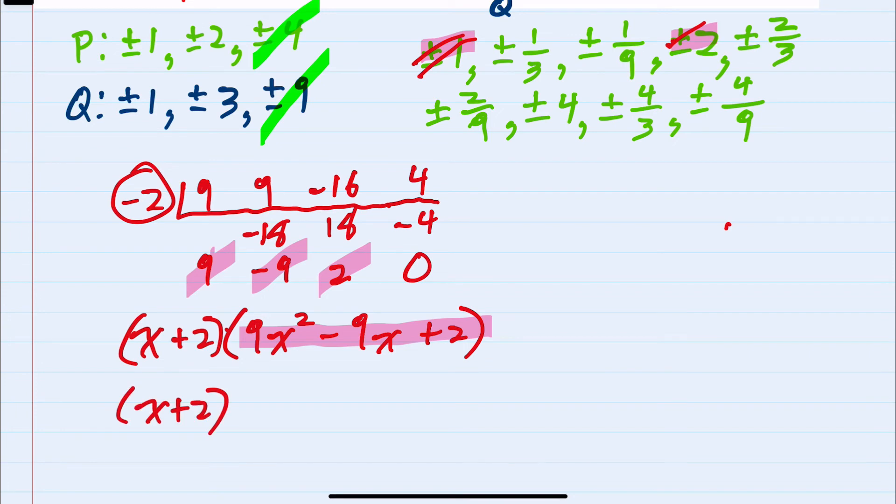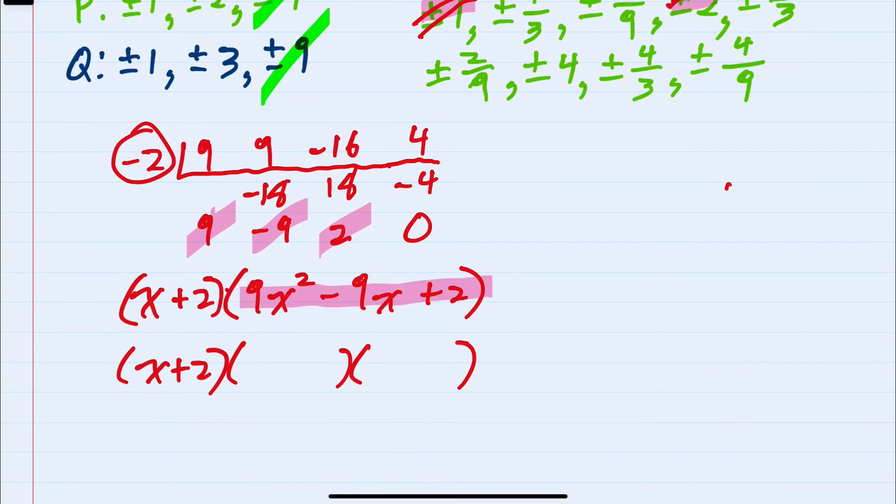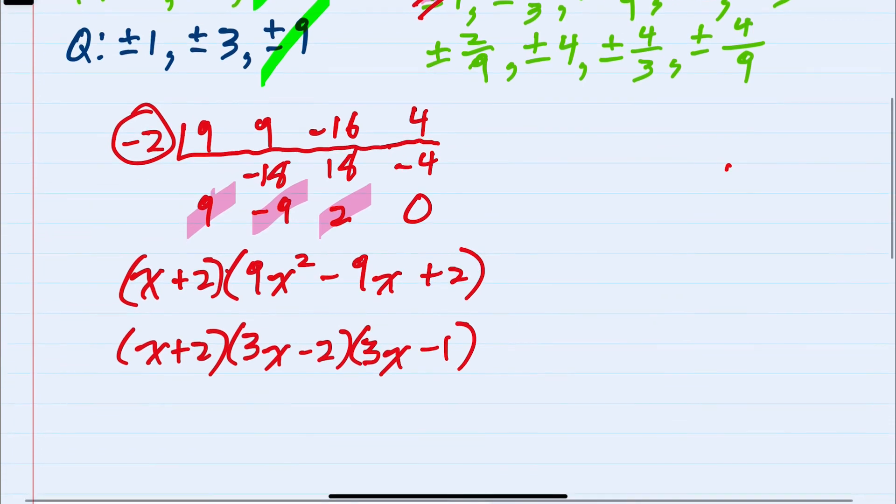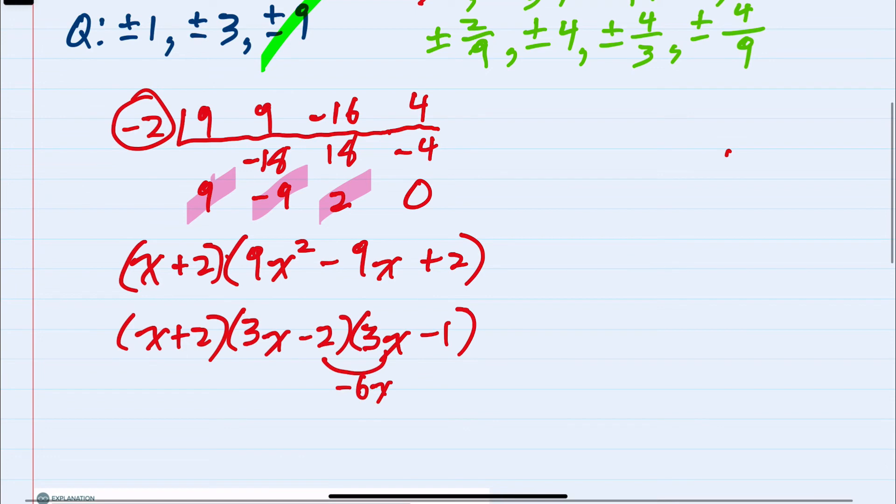And to find the zeros that result from this portion, I can attempt to factor by either trial and error or the AC method. By trial and error, this would either be 3x and 3x or 9x and 1x. And since that final term is a positive 2, the signs have to be the same. I can use minus 2 and minus 1 to multiply to get that 2. And then my middle term, negative 6x, negative 3x, does give me the minus 9x. So I have successfully factored the second portion.